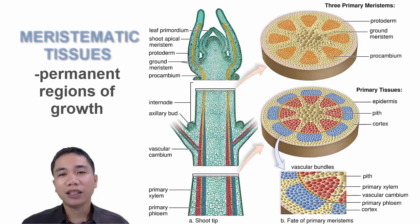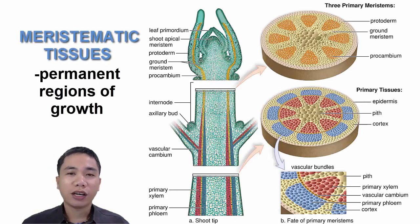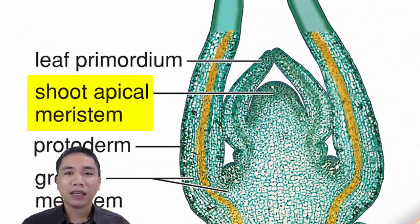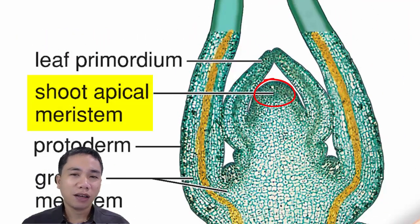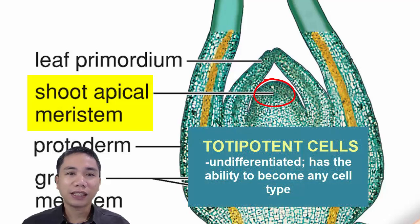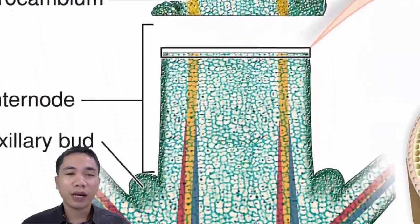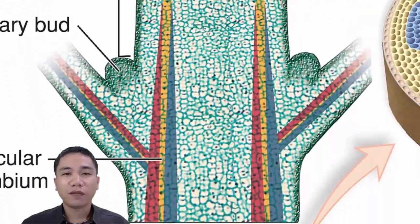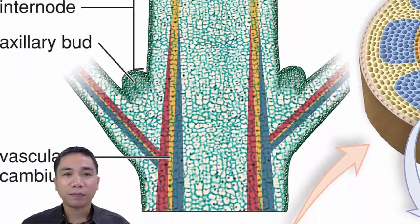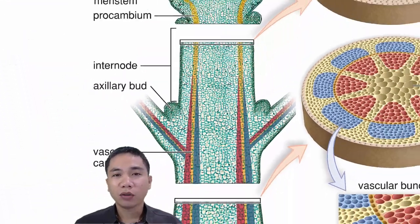I'll begin with meristematic tissues, which are permanent regions of growth in the plant. You will find here relatively small, actively dividing cells that are totipotent. This means these cells are not yet specialized to perform a specific function until they are pushed to areas of maturation as the plant grows in size.